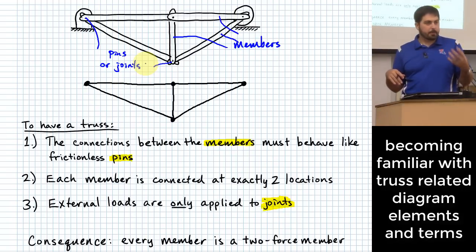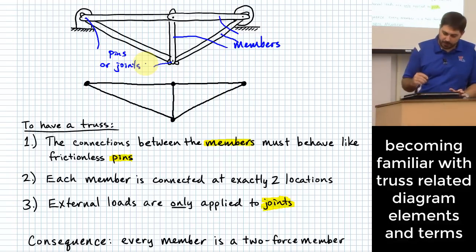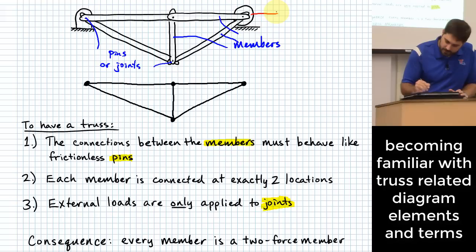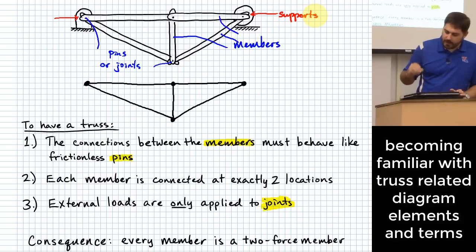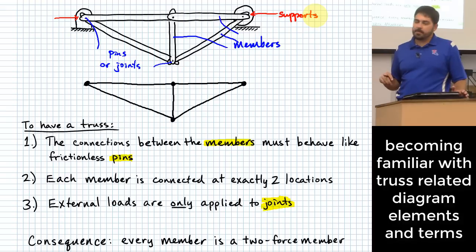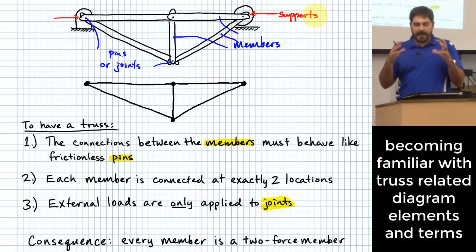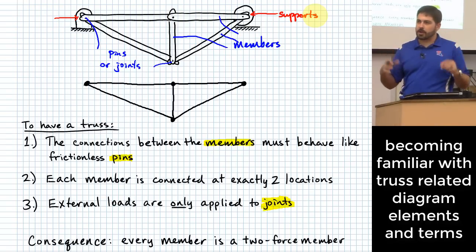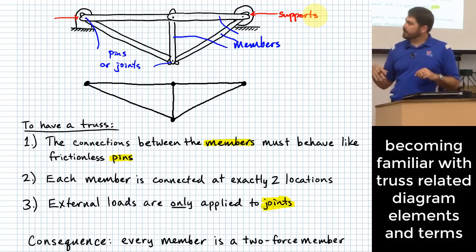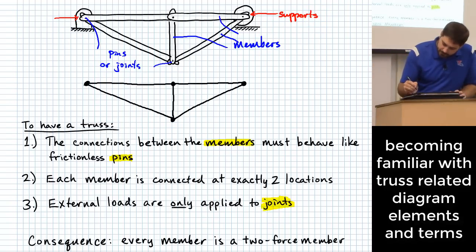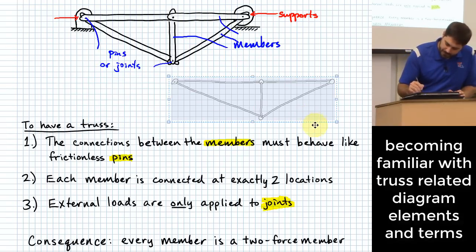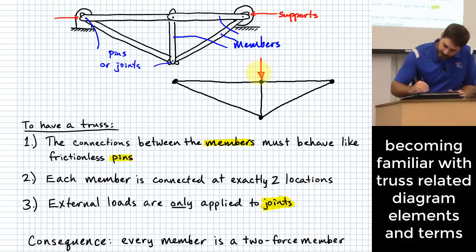One thing not listed here is 'supports.' Where you have supports, does that imply that there is some kind of force acting there? I want to give us the idea of where external forces come from for a structure like this. Rather than draw it on the top picture, let me show the same truss with an applied force — I'll just call it F for right now.